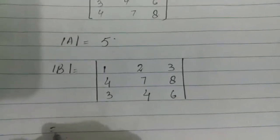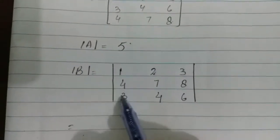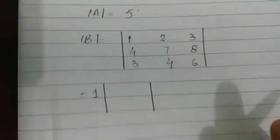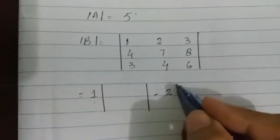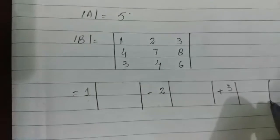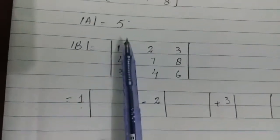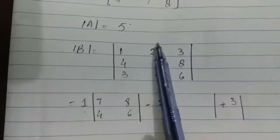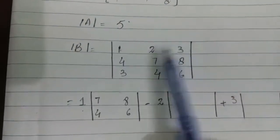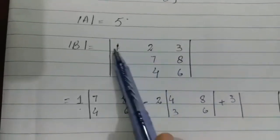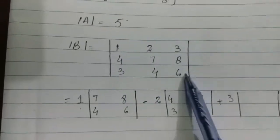We find the determinant by cofactor expansion along the first row. The first element is 1 from row one, column one, then minus sign for the second element 2, then plus for the third element 3. Skipping the first row and first column gives the 2×2 matrix [7, 8; 4, 6]. Skipping the first row and second column gives [4, 8; 3, 6]. Skipping the first row and third column gives [4, 7; 3, 4].